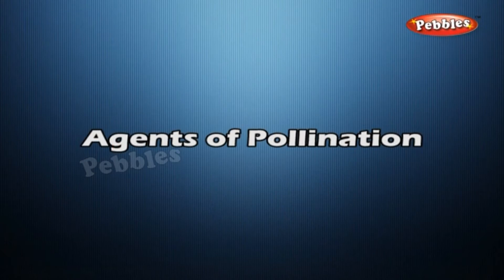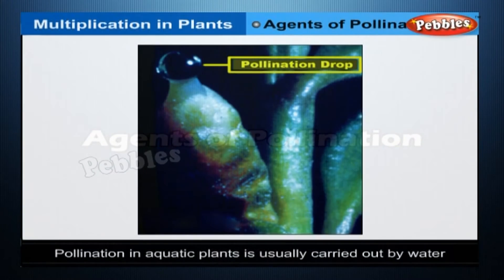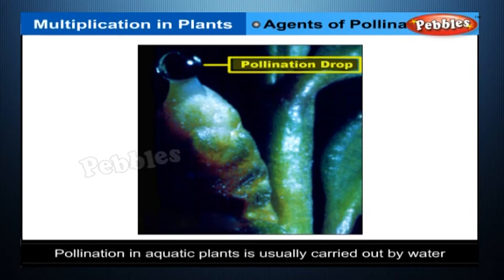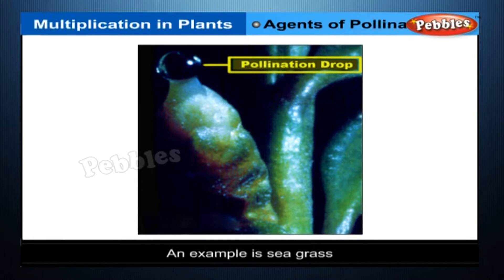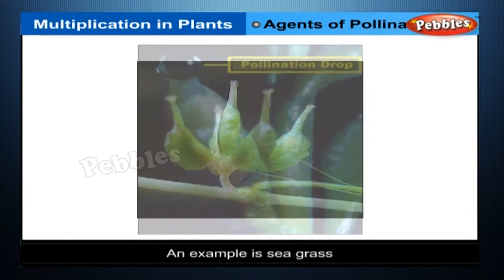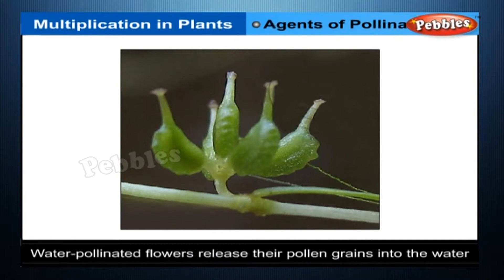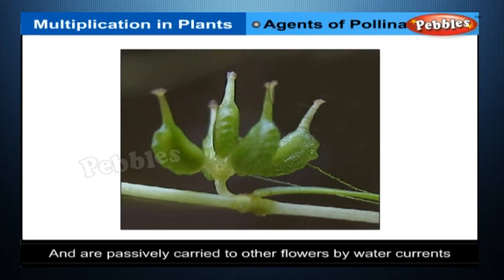Water: pollination in aquatic plants is usually carried out by water. An example is seagrass. Water pollination in aquatic plants is carried out by water currents.